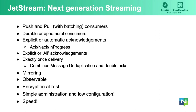JetStream provides both push consumers, which are event-driven, and pull consumers, which are demand-driven, allow for batching, and make for very easy horizontal scaling of the processing of all messages in a stream. You can have durable or ephemeral consumers, as well as explicit or automatic acknowledgements, meaning the application can decide to explicitly acknowledge or let the library do it.